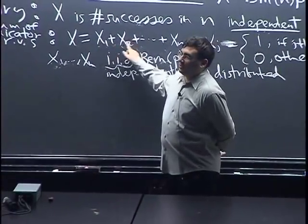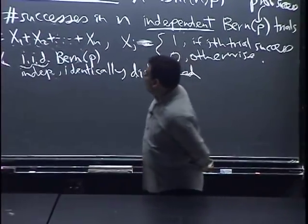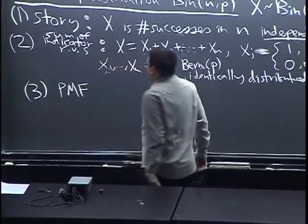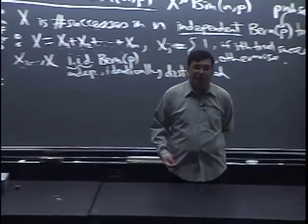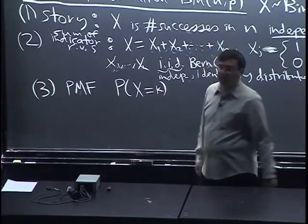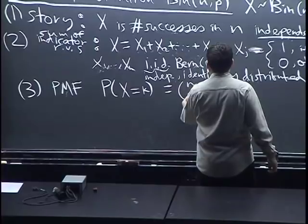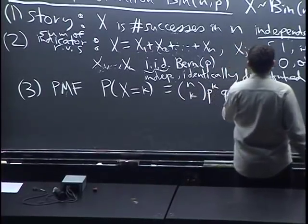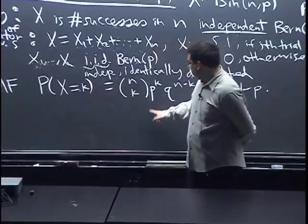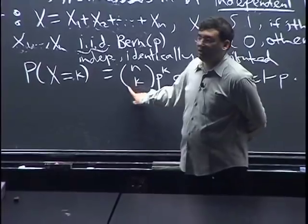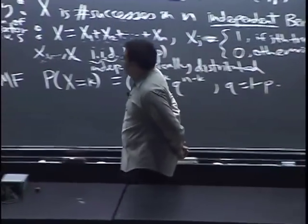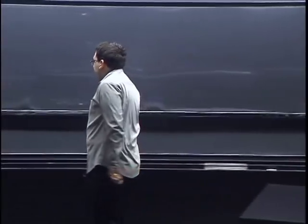The third way is to write down the PMF — the probability mass function. All that is, is saying what's the probability that X takes on any particular value. For the binomial, that's n-choose-k times p to the k times q to the n minus k, where q equals 1 minus p, because if we have n trials with exactly k successes, n-choose-k is the number of ways to choose where the successes are.